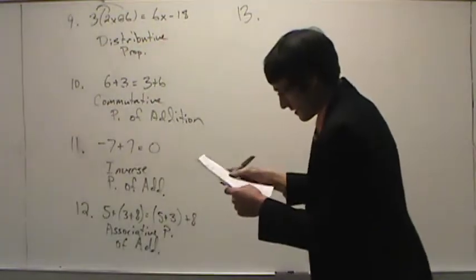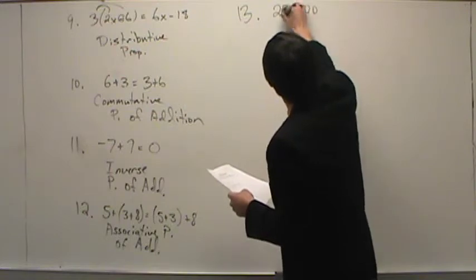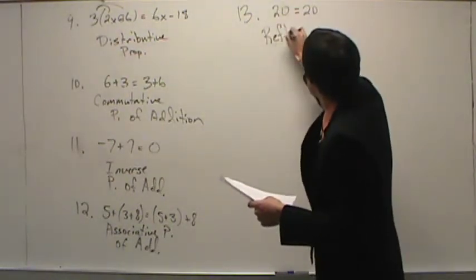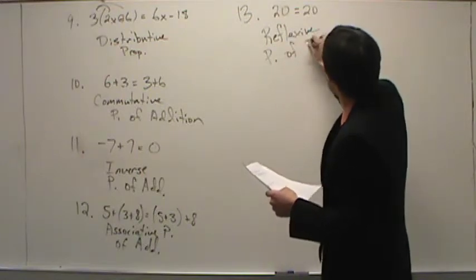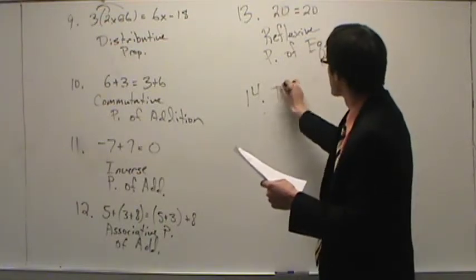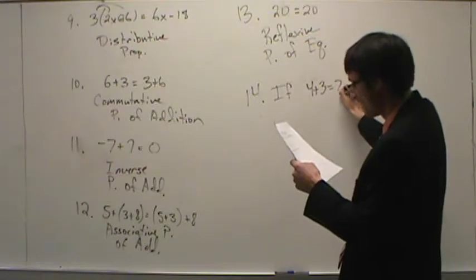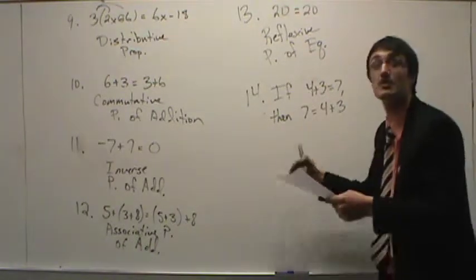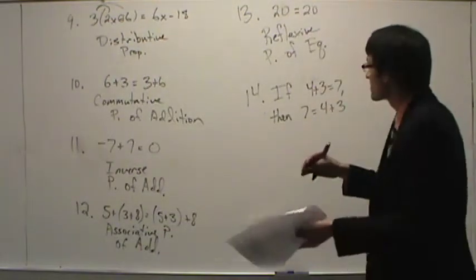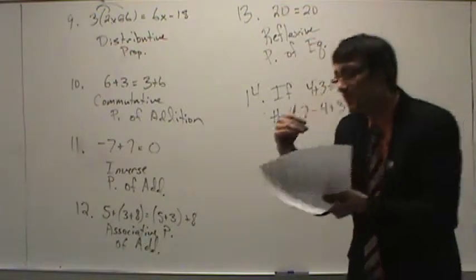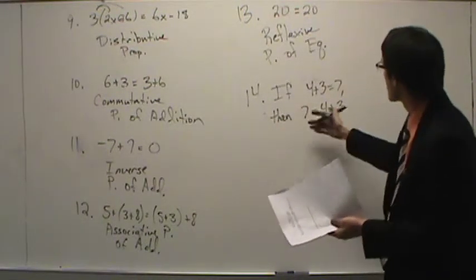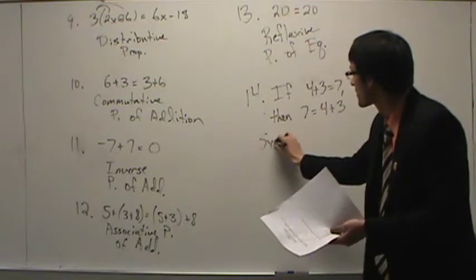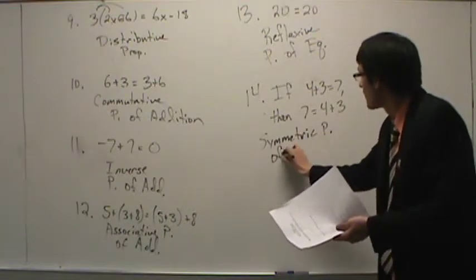Number thirteen: twenty equals twenty. Something is equal to itself — that's the reflexive property of equality. Number fourteen: if four plus three is seven, then seven is four plus three. If-then gives a clue that it's a property of equality. What happened? We turned the equation around — the first became the second and the second became the first. We flipped it around. This is the symmetric property of equality.